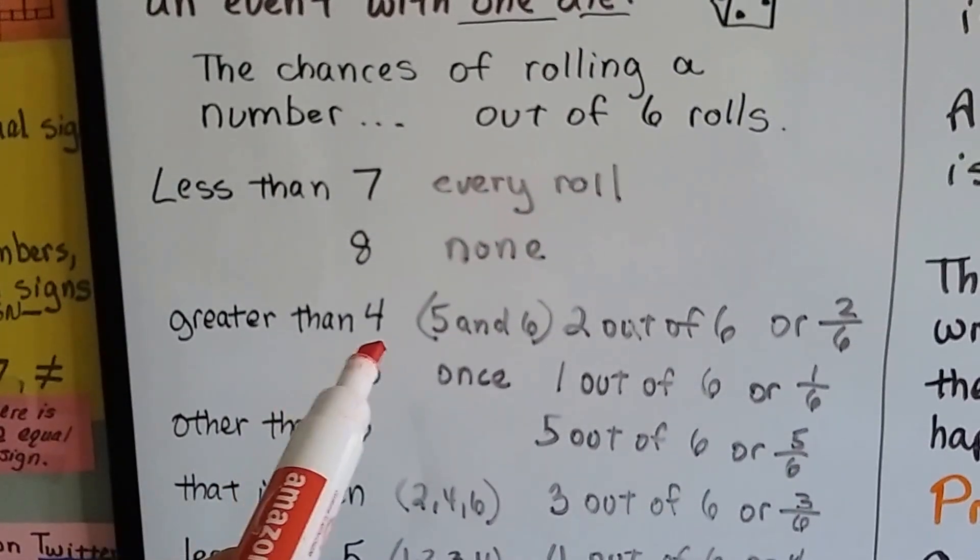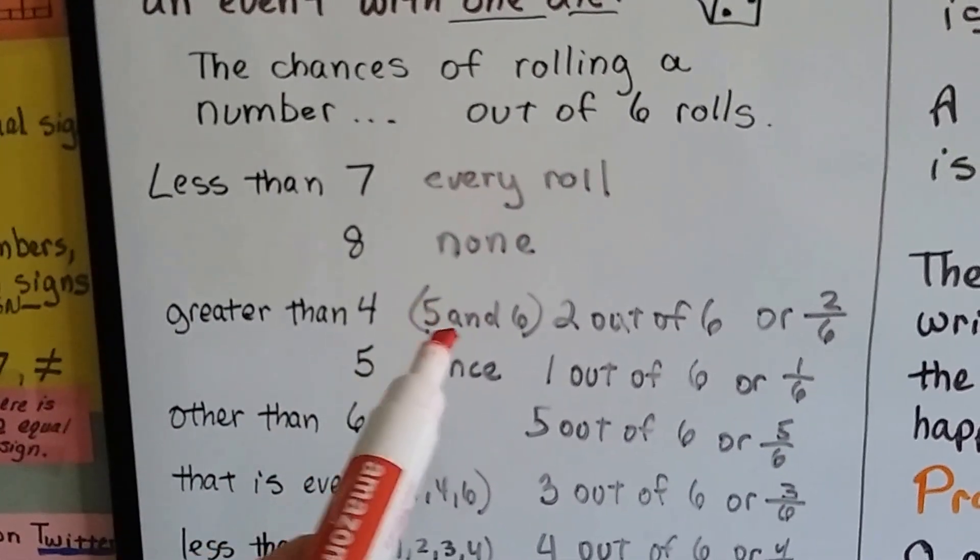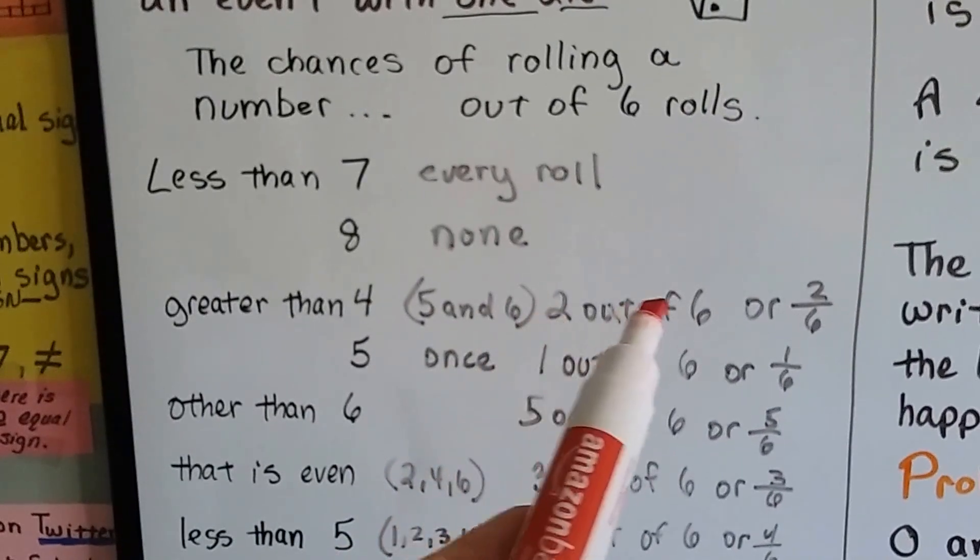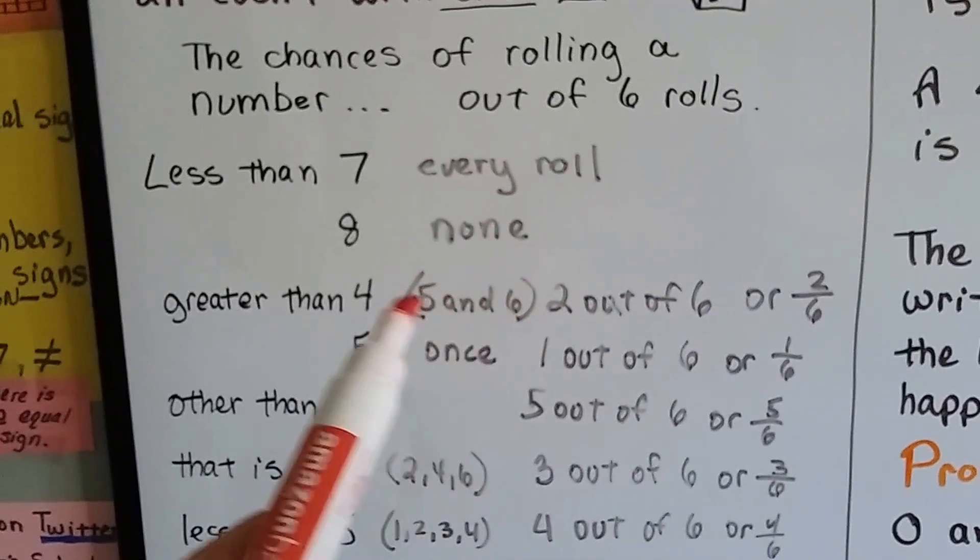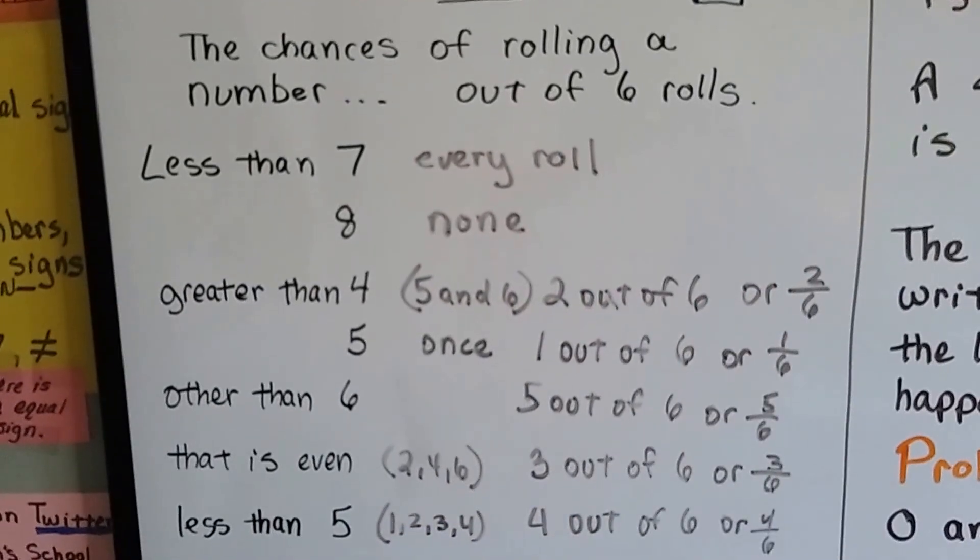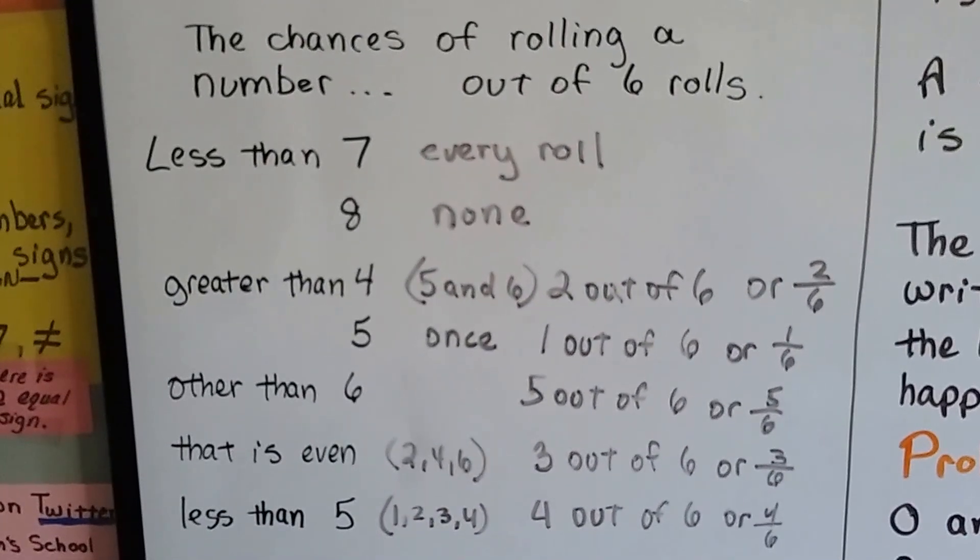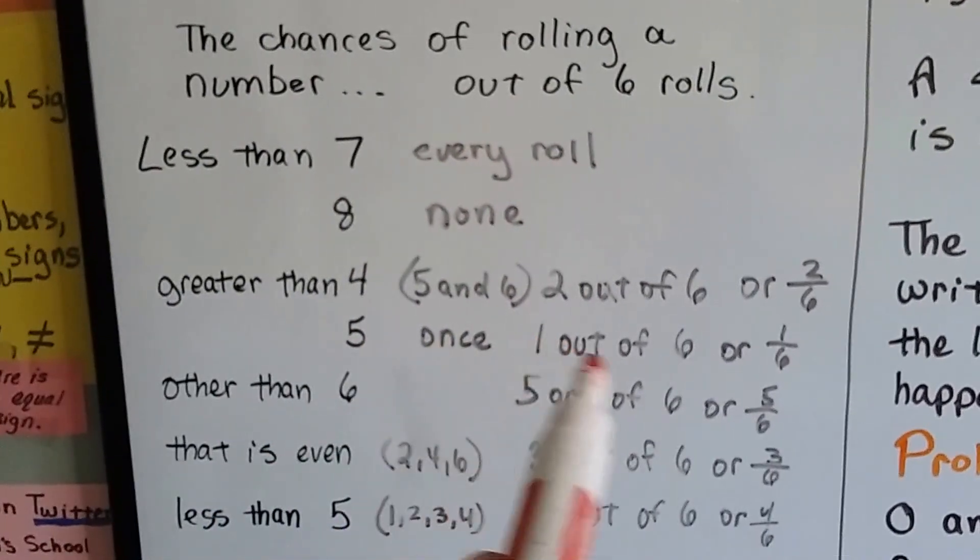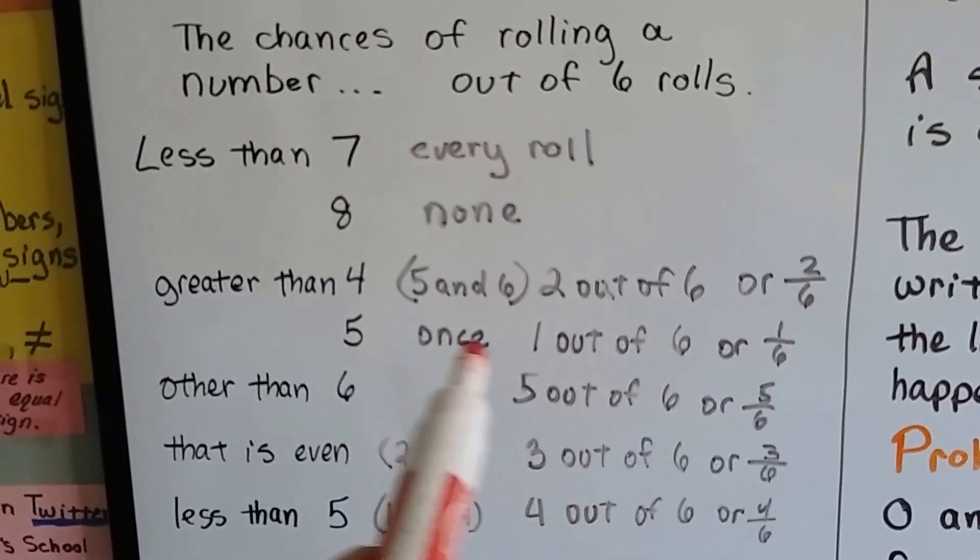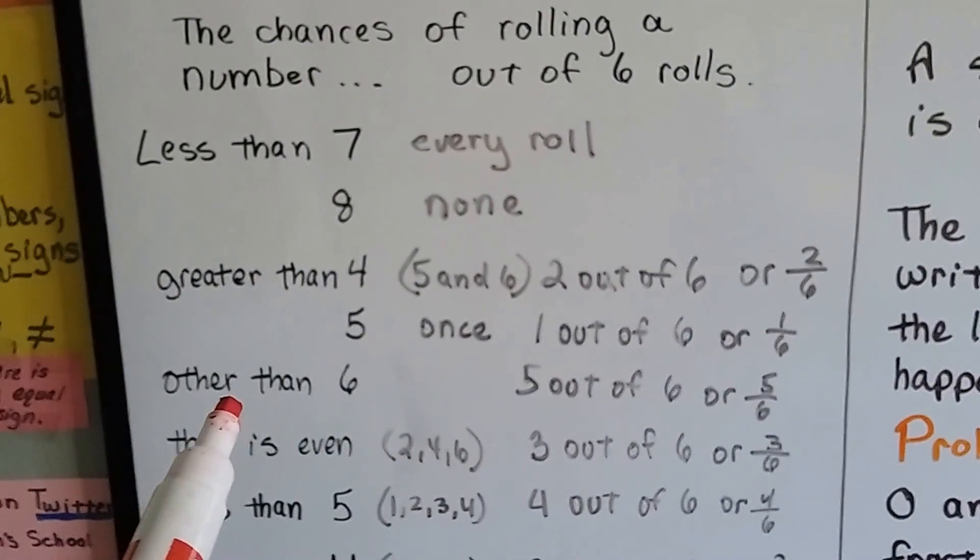The chance of rolling a number greater than four, that would be a five or a six, that would be two out of six chances, because there's two of these numbers out of the six numbers. So it would be two-sixths, or one-third of a chance. Chance of rolling a five, we'd have one chance, one out of six, because there's one five on that die.